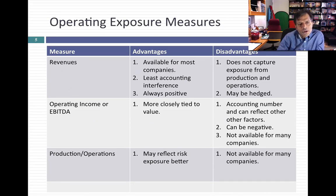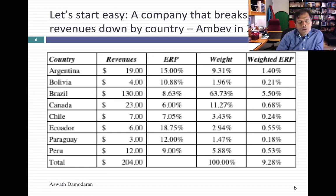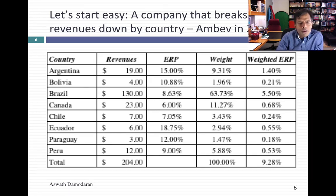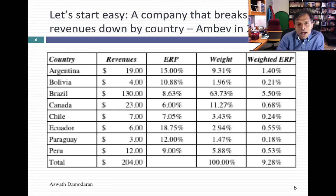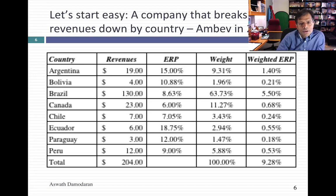So I'm going to go back to revenues. This is MBEV in 2012 — they broke their revenues down by region. You can see that Brazil is about 63.7% of revenues, and the remaining revenues are broken out mostly across Latin America with a chunk from Canada. The weights are computed by dividing each country's revenue by total revenues, and they have to add up to 100%. Those are the equity risk premiums I had for those countries in 2012. The weighted equity risk premium for MBEV, based on the countries it's in, is 9.28%.